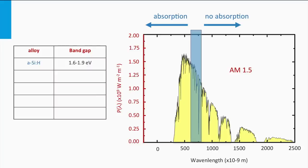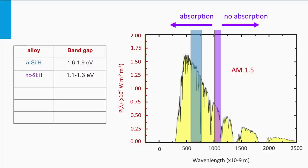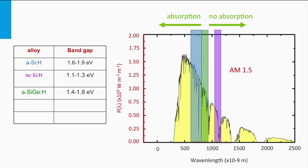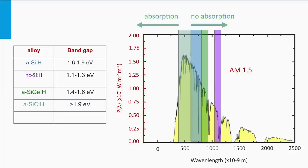Hydrogenated amorphous silicon has a bandgap in the order of 1.6 up to 1.9 eV, which can be tuned by the amount of hydrogen incorporated into the silicon network. Nanocrystalline silicon has a bandgap in the range of 1.1 up to 1.3 eV. The bandgap can also be tuned by inclusion of other elements. Hydrogenated amorphous silicon germanium alloys can have bandgaps in the range of 1.4 up to 1.6 eV. Silicon mixed with carbon — amorphous silicon carbide — can have bandgaps of 1.9 eV and larger. Nanocrystalline silicon oxides have bandgaps larger than 2 eV.